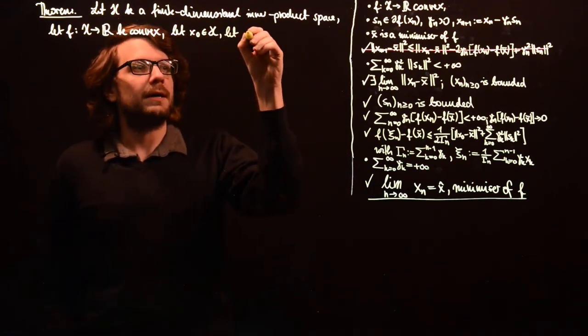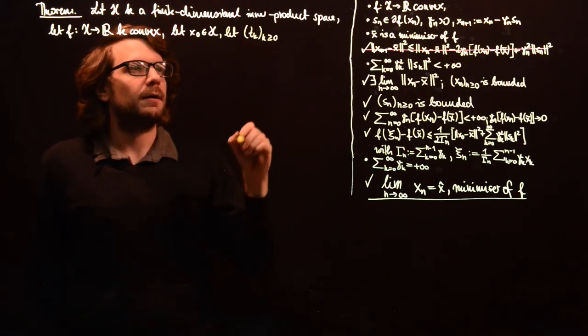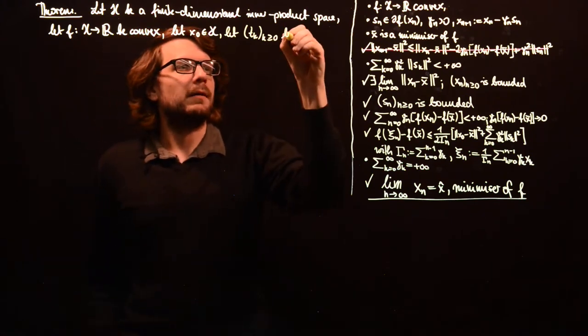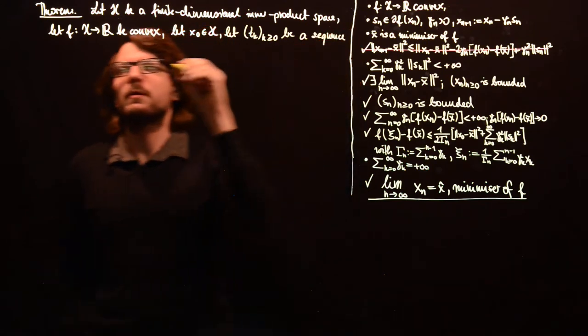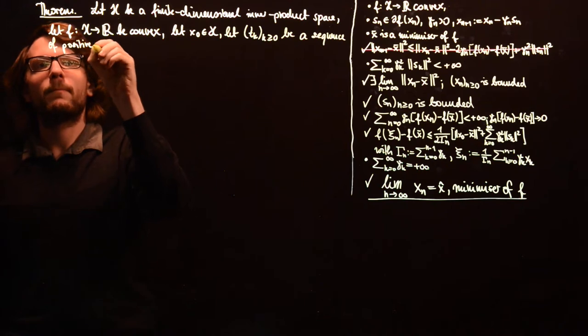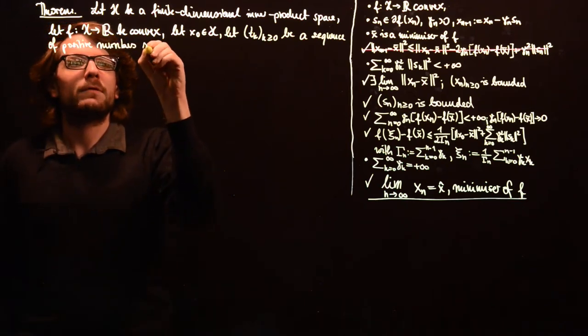Let t_k be a sequence of positive numbers such that we want the sum of t_k squared to be less than plus infinity.